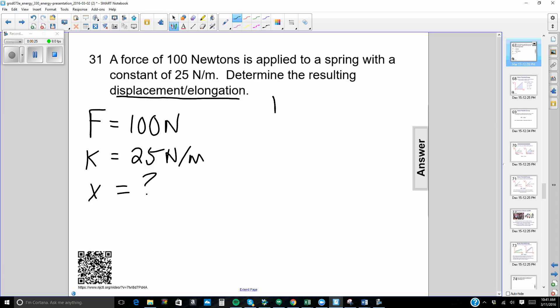We know that the force on a spring is equal to the spring constant times displacement. Since we are looking for x or displacement, we need to isolate it and get it by itself, so I'm going to divide both sides by k. You see over here on the right that k's cancel out, so I get x equals F over k.